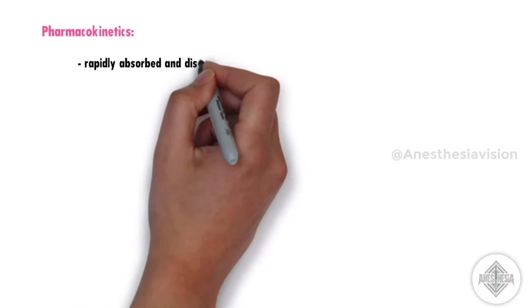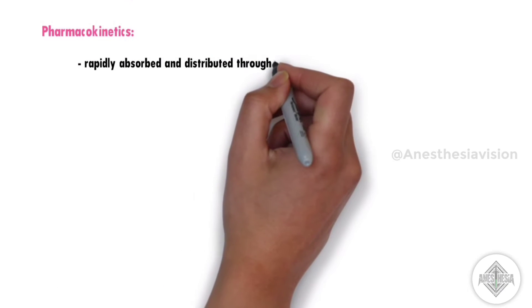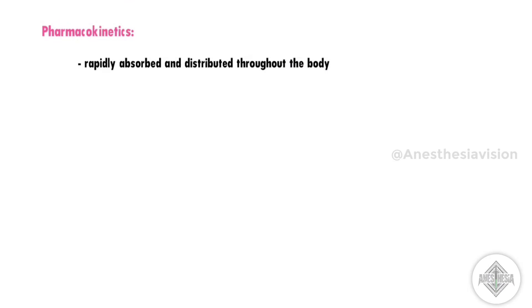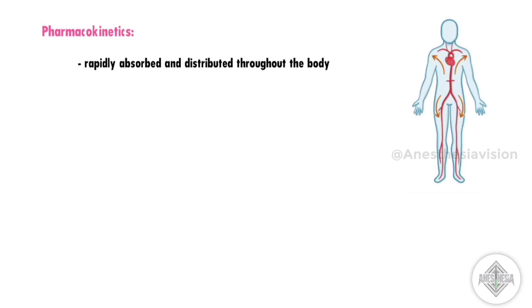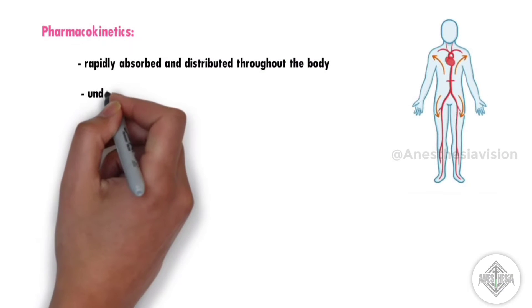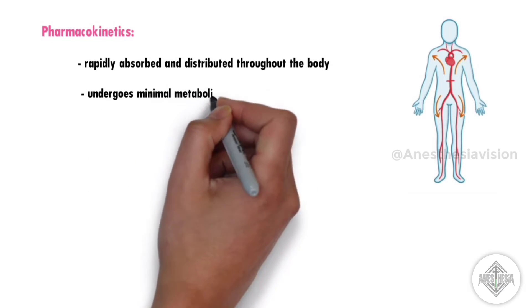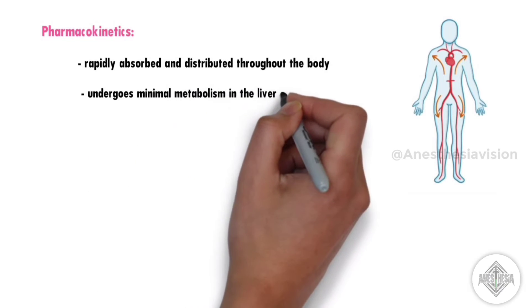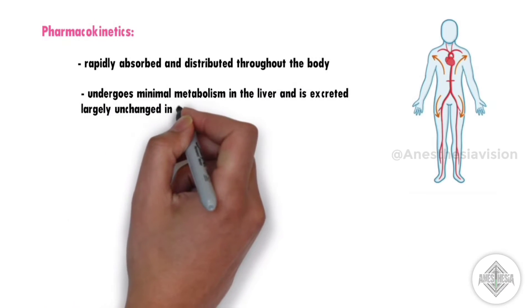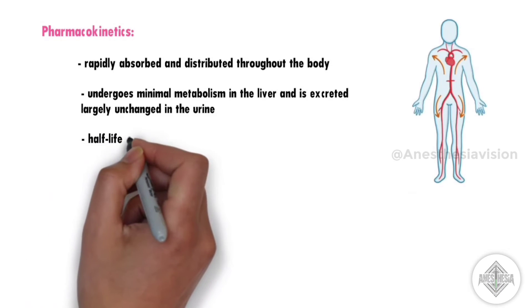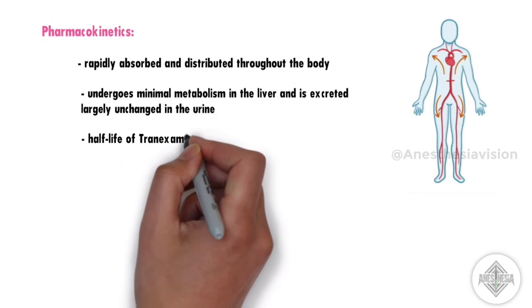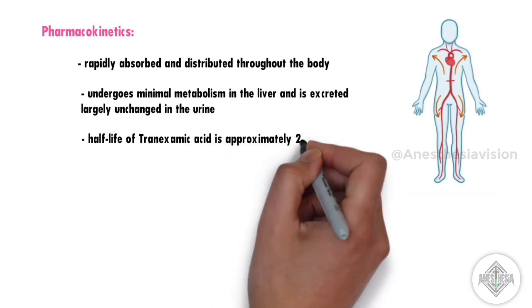Pharmacokinetics: Upon administration, tranexamic acid is rapidly absorbed and distributed throughout the body. It undergoes minimal metabolism in the liver and is excreted largely unchanged in the urine. The half-life of tranexamic acid is approximately two to three hours.